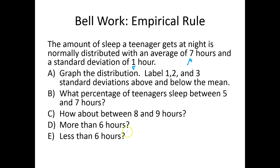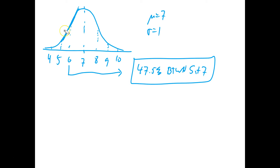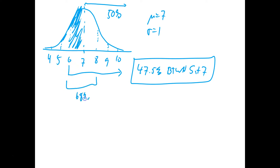Now let's find more than 6 hours. That starts at 6 and goes all the way to the right. From 7 out to the right is 50%. Just from 6 to 7 — well, 6 to 8 is 68%, so this region from 6 to 7 is 34%. So 34 plus 50 gives us 84%. That's all there is to it.